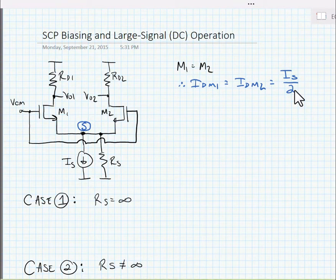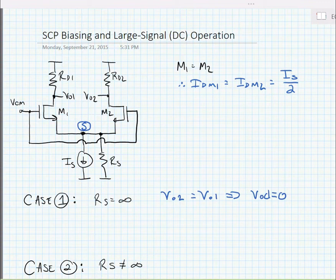Let's look at two cases. The first case, we're going to say that this is an ideal current source. IS is an ideal current source. In other words, RS is equal to infinity. If we tie a common mode voltage to the inputs, in other words, VCM is tied to the gates of both M1 and M2, then we can say that there's no differential output voltage. VO2 would be equal to VO1, so VO2 minus VO1 is equal to zero, or our differential output voltage is equal to zero.